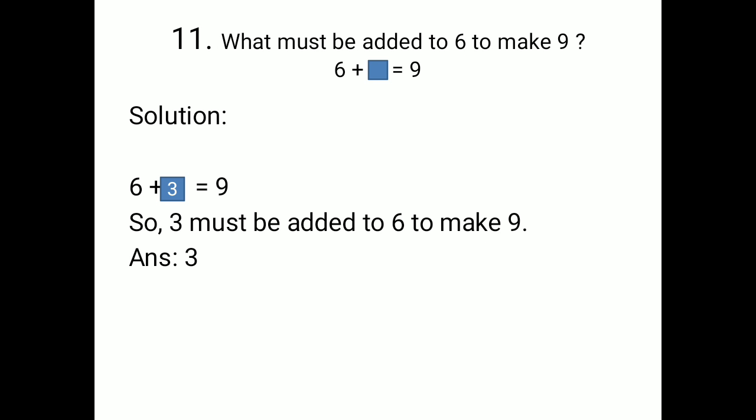Number 11: What must be added to 6 to make 9? So, if you want to make 9, you have to add 3 with 6. If you subtract 6 from 9, you will get 3. So, 3 must be added to 6 to make 9. The answer is 3.